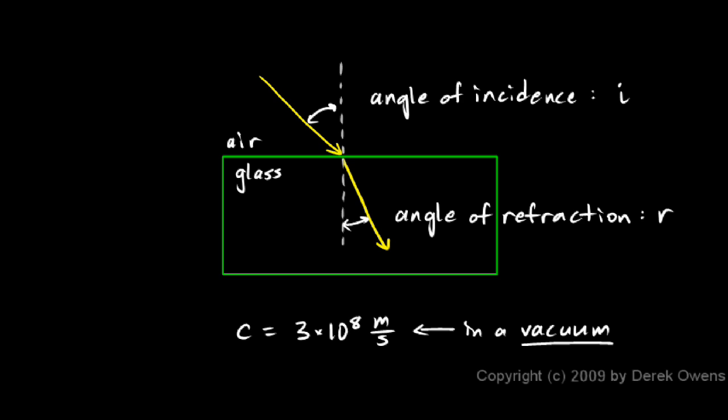And by vacuum, of course, I mean empty space, going through nothing, not like a vacuum cleaner. That's the speed of light in empty space, in a vacuum. In other materials, light typically slows down. So when it goes into the glass, it slows down, and that slowing causes it to bend.